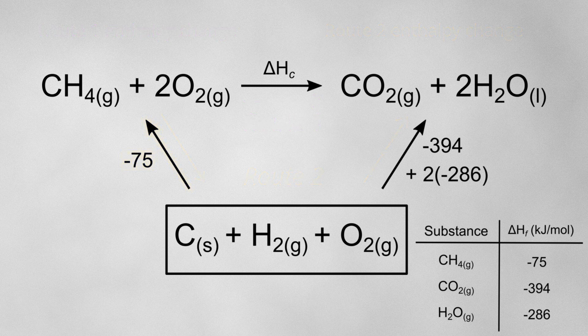I've always found that a much easier method for solving Hess cycles is to find two routes which both follow the direction of your arrows. They don't have to start at the reactants and end at the products. For this Hess cycle, I can start both routes at my box underneath the reaction. One route will go from the box up to the reactants and across to the products, and the other will go from the box directly to the products.